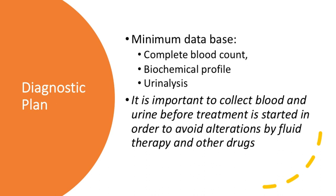The initial diagnostic plan is to get a minimum database: CBC, biochemical profile, and urinalysis. It's important to collect this blood before you start treatment so you can have a very clear picture of where the animal starts before you start altering electrolytes, fluid balance, and glucose with the therapy.